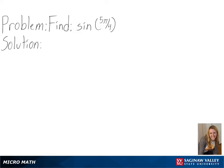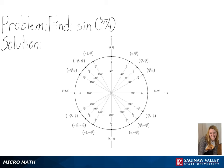Our problem is to find sine of 5 pi over 4. To solve this, we will be using a unit circle. We will start at (1, 0) and then move counterclockwise until we have traveled the distance of 5 pi over 4.